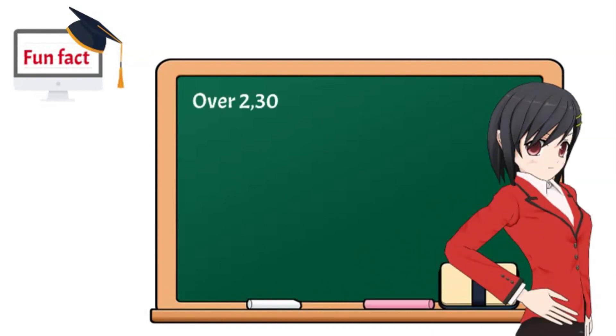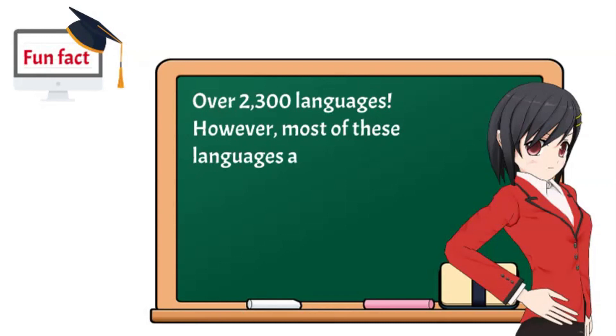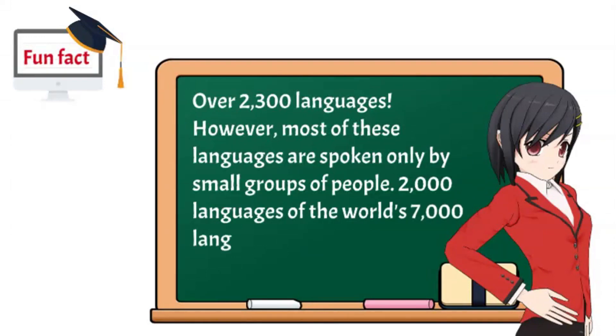Did you know, the most languages are spoken in Asia, over 2,300 languages. However, most of these languages are spoken only by small groups of people. 2,000 languages of the world's 7,000 languages are spoken by less than 1,000 people.